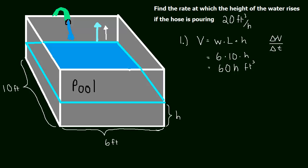well, it's not just going to be delta V over delta T, we're actually going to have to take a derivative. So step two is we're going to take a derivative.